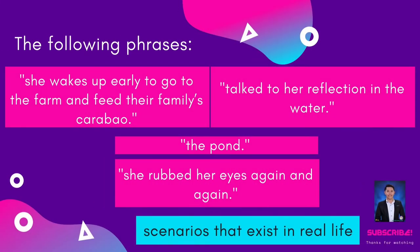Now, let's look at these phrases from the story. 'She wakes up early to go to the farm and feed their family's carabao.' 'Talk to her reflection in the water by the pond.' 'She rubbed her eyes again and again.' These are the scenarios that exist in real life.